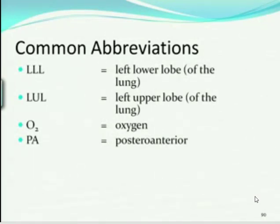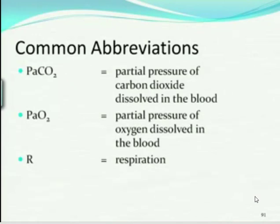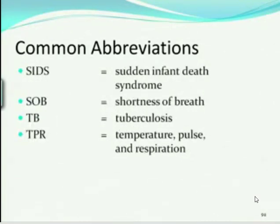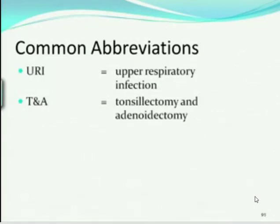O2 — oxygen. PA — posteroanterior. R — respiration. SIDS — you must know SIDS. SOB — shortness of breath. TB — tuberculosis. TPR — temperature, pulse, respiration. Everything on these slides you need to know. URI — upper respiratory infection. T&A — tonsillectomy and adenoidectomy.